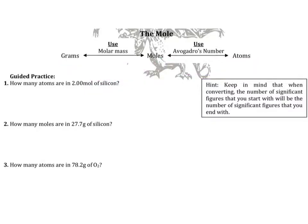Let's look at the first practice problem. We're given 2.00 moles of silicon and the question is asking for atoms — so we need to take the moles and convert to atoms. Looking at our flowchart, we're given moles and it's asking for atoms, and we can convert directly between the two.